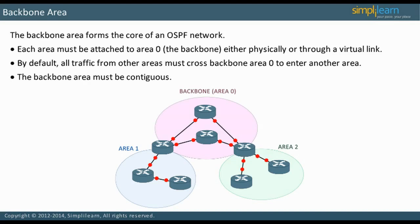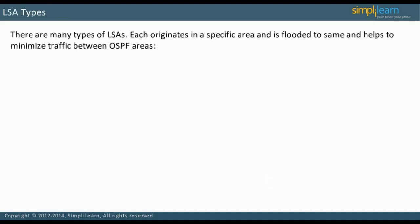If a single area OSPF is configured, then there is only one area, that is, Area 0. There are many types of LSAs. Each originates in a specific area and is flooded to the same area, which minimizes traffic between OSPF areas.